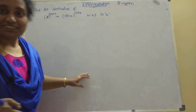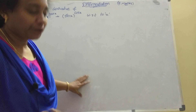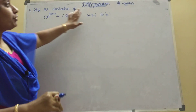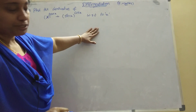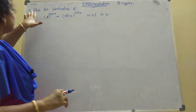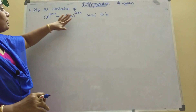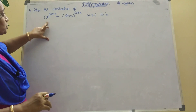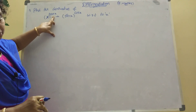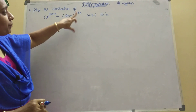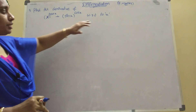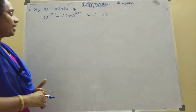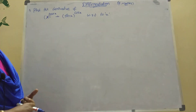Please subscribe my channel and share my channel. Now come to the point. Here, differentiation 7 marks I am explaining. Find the derivative of x power tan x plus sin x power cos x with respect to x. You should find the differentiation.